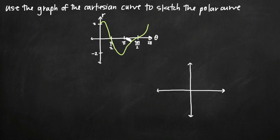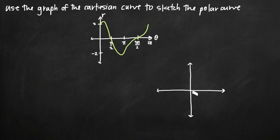In this particular problem, we've been given this curve here sketched in green on a Cartesian coordinate system. We've been told that instead of x and y axes, we have axes for theta and r. The graph is along a Cartesian coordinate system and we need to take the information from this graph and translate it so that we can graph this same curve on a polar coordinate system.